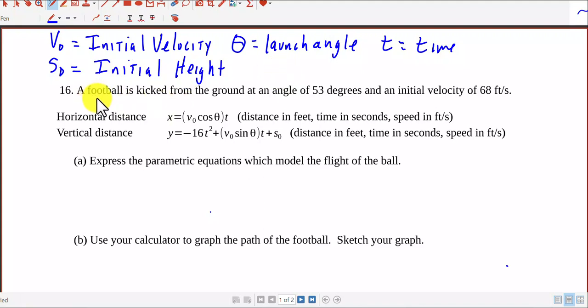So let's take a look at this particular word problem. A football is kicked from the ground at an angle of 53 degrees and with an initial velocity of 68 feet per second.